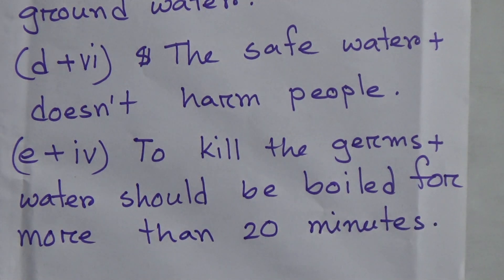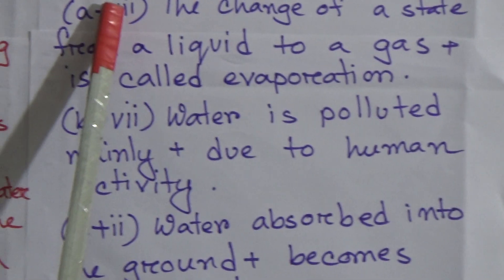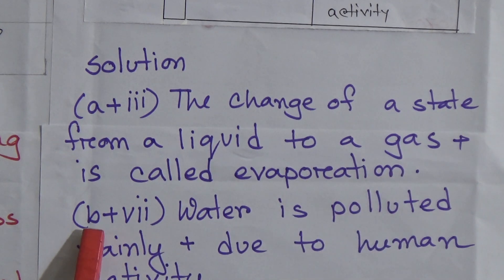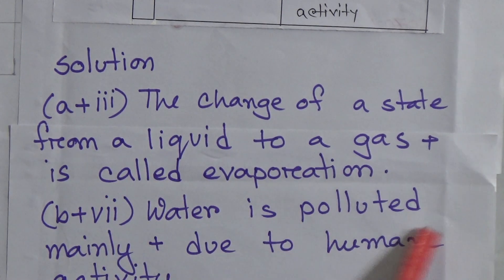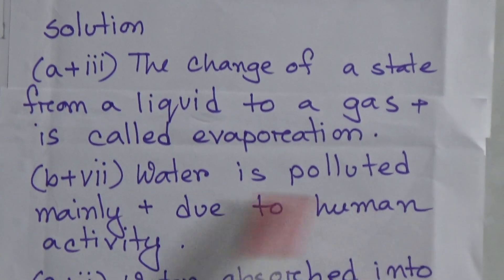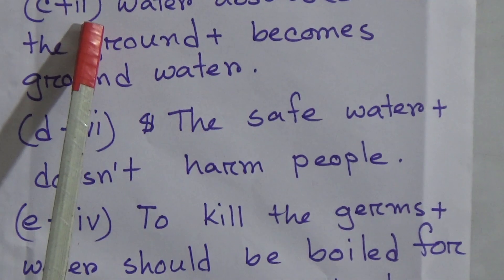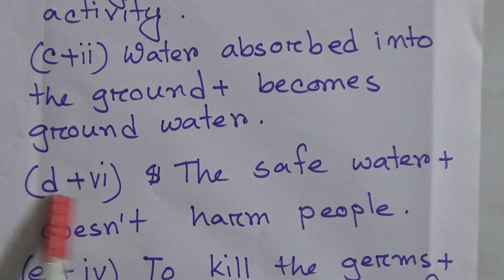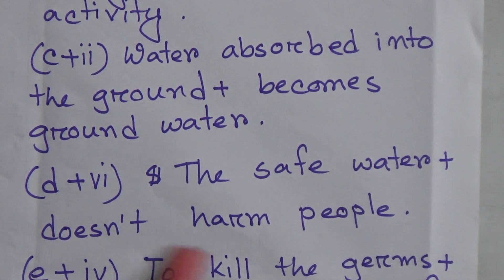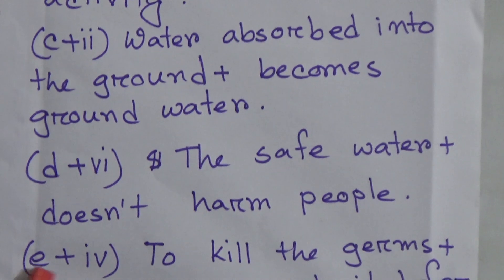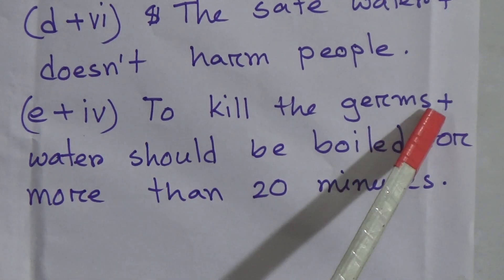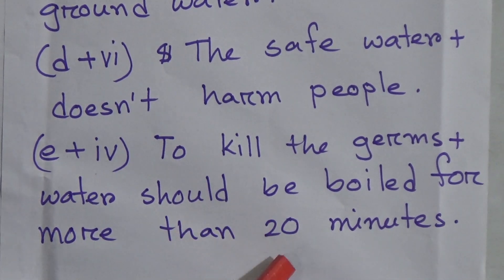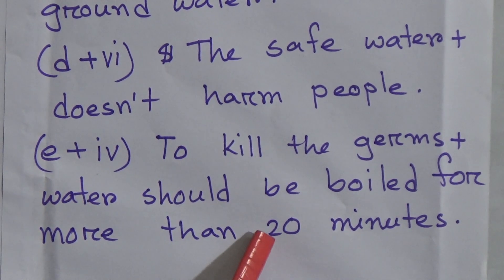Dear students, again: A matches with 3 — the change of a state from a liquid to a gas is called evaporation. B matches with 7 — water is polluted mainly due to human activity. C matches with 2 — water absorbed into the ground becomes ground water. D matches with 6 — the safe water does not harm people. E matches with 4 — to kill the germs, water should be boiled for more than 20 minutes. This is the best procedure to kill the germs.